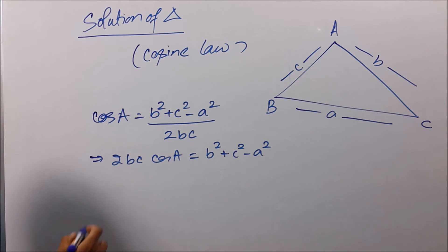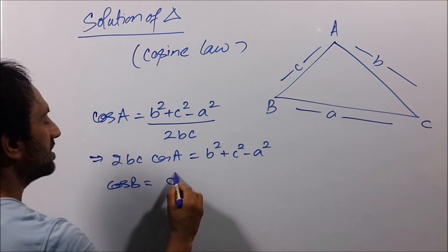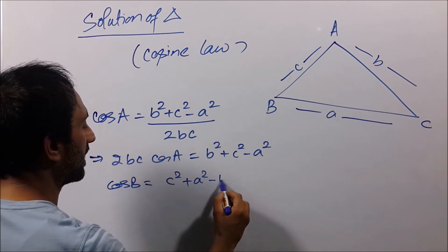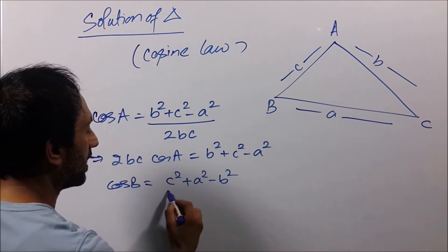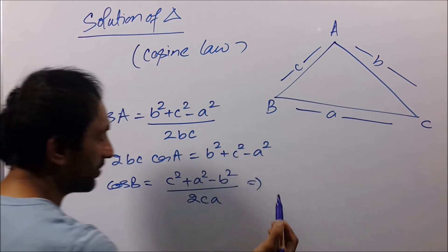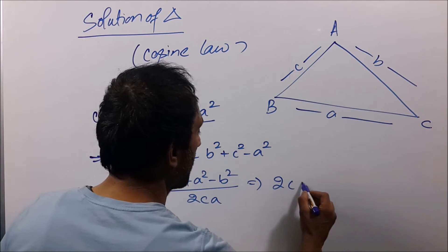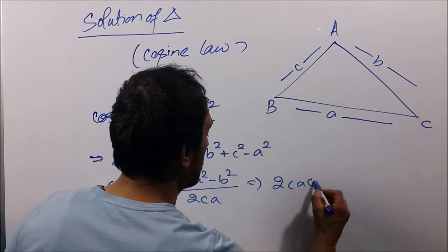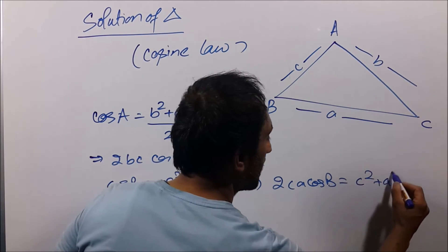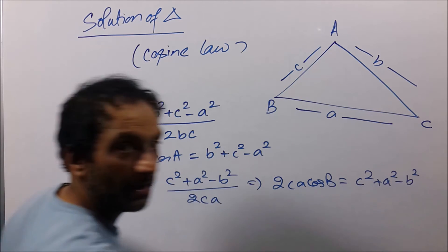Similarly, we can write cos B equals c² + a² − b² upon 2ca. You can also write it as 2ca·cos B equals c² + a² − b².